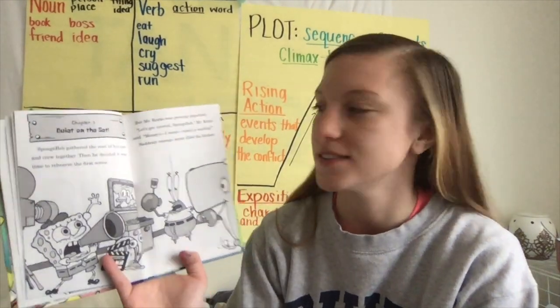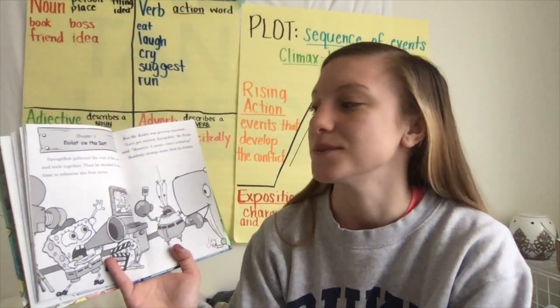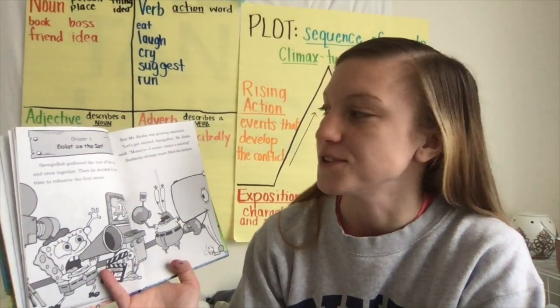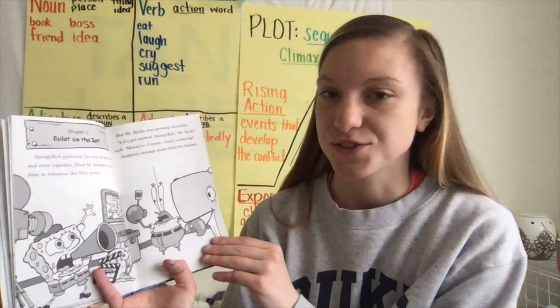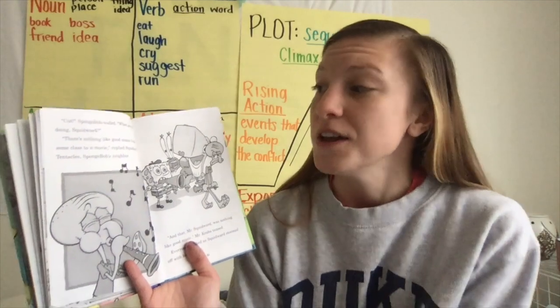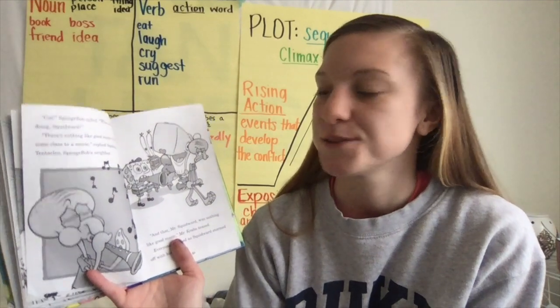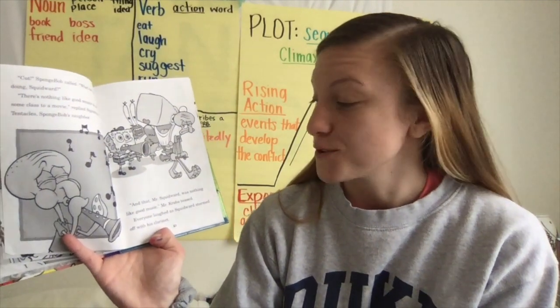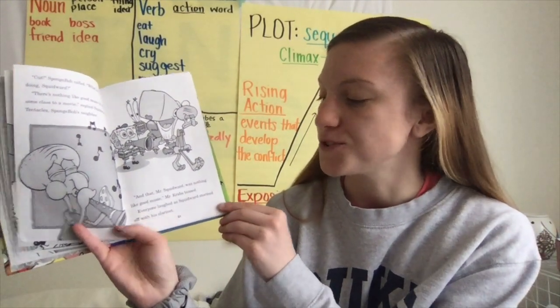Chapter three: Quiet on the Set. SpongeBob gathered the rest of his cast and crew together. Then he decided it was time to rehearse the first scene, but Mr. Krabs was growing impatient. 'Let's get started, SpongeBob,' Mr. Krabs said. 'Money's — I mean — time's a wasting.' Suddenly strange music filled the kitchen. 'Cut!' SpongeBob called. 'What are you doing, Squidward?' 'There's nothing like good music to add some class to a movie,' replied Squidward Tentacles, SpongeBob's neighbor. 'And that, Mr. Squidward, was nothing like good music,' Mr. Krabs teased. Everyone laughed as Squidward stormed off with his clarinet.